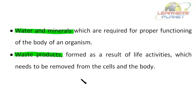Red blood cells contain a special pigment known as hemoglobin, which plays an important part in the transport of oxygen. When blood passes through the lungs, oxygen is diffused from the lungs into the blood. The oxygen is then transported by red blood cells to other parts of the body. As the blood passes other cells, it gives up the oxygen to those cells which are undergoing respiration.